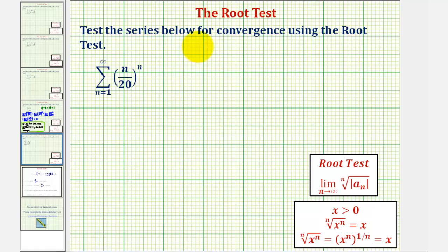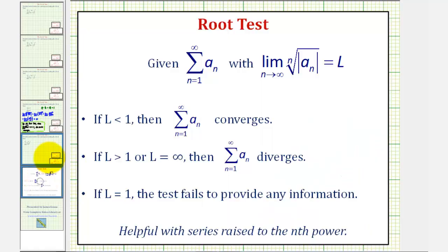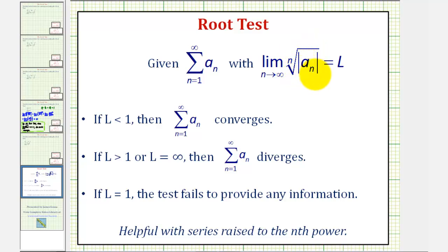We want to test the series below for convergence using the root test. To apply the root test, given the summation of a sub n, we'll find the limit as n approaches infinity of the nth root of the absolute value of a sub n.